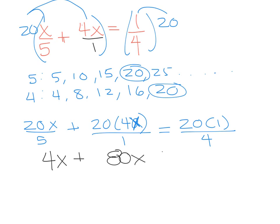20 times 1 is 20, and 20 divided by 4 is 5. So then you can combine your like terms, 80 plus 4 is 84x, divide each side by 84.